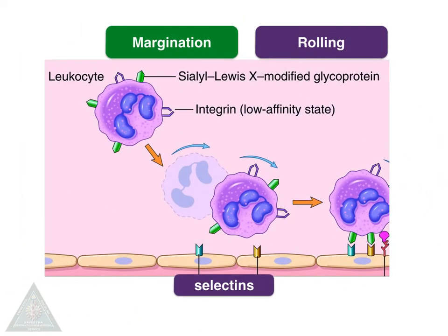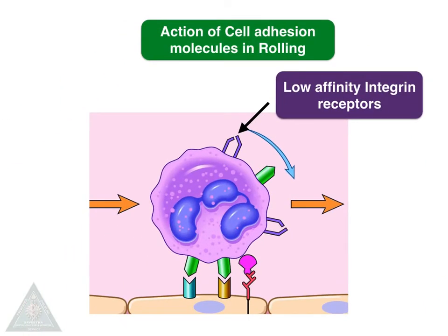First comes margination and rolling. This is through leukocyte ligands — that is sialyl Lewis glycoprotein ligands — which bind to the endothelial surface receptors called selectins. The cell then rolls due to the low-affinity state of the integrin receptor.